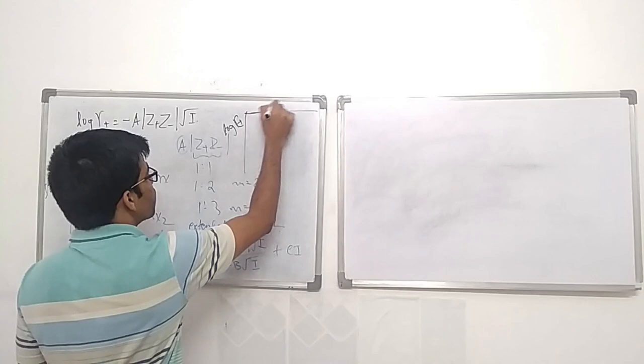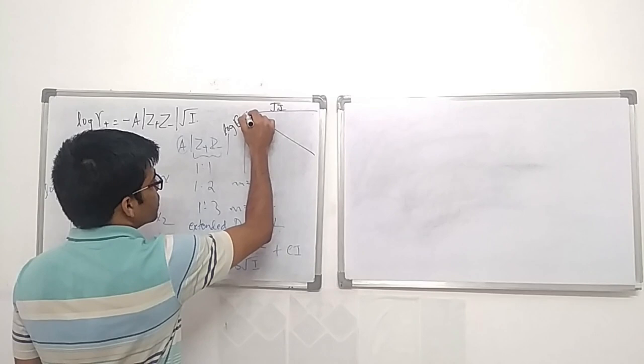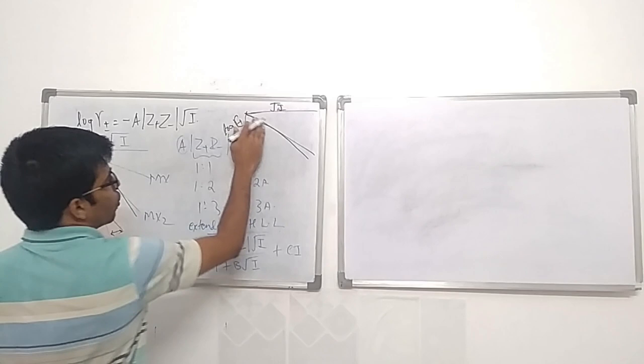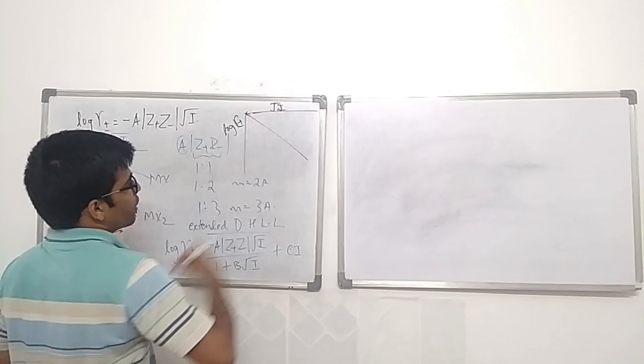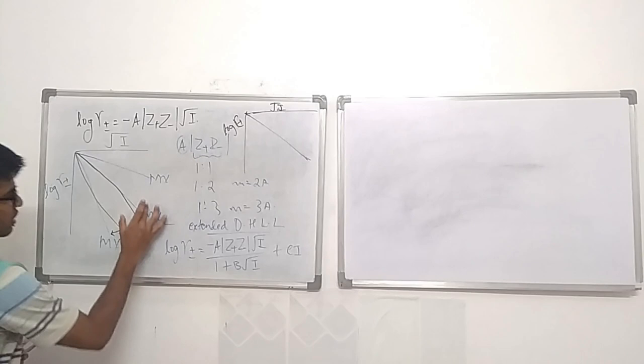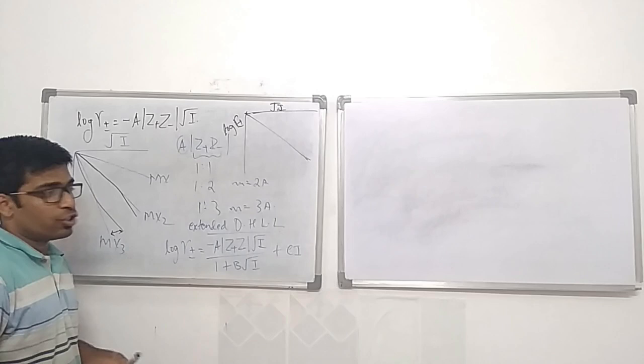The benefit of the extended expression is better fitting with experimental results even at high concentrations — only at very high concentrations does it start deviating from ideality. This gives better fitting over a wider range of ionic strength and concentration.